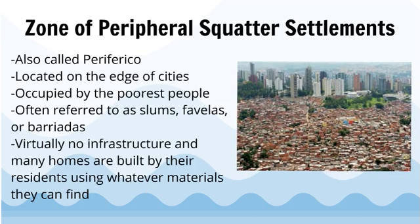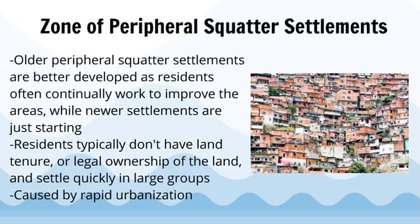The zone of peripheral squatter settlements, also called perifico, is located on the edge of cities and is occupied by the poorest people — often referred to as slums, favelas, or barridas. There is virtually no infrastructure, and many homes are built by residents using whatever materials they can find. Older peripheral squatter settlements are better developed as residents continually work to improve the areas, while newer settlements are just starting. Residents typically don't have land tenure or legal ownership, settle quickly in large groups, and this is caused by rapid urbanization.